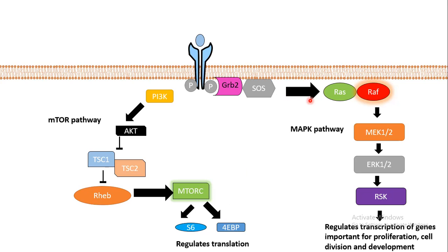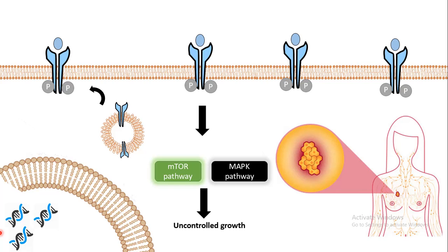Another important pathway for growth and division of cells is the MAP kinase pathway. This activated receptor can activate the signaling cascade of the MAP kinase pathway, which regulates multiple genes including cyclin D1, which helps in cell division and thereby cellular proliferation. Other anti-apoptotic genes like bcl-2 and bcl-xl are also downstream products of this MAP kinase pathway. In cancer, the number of receptors on the cell surface dramatically increases from 20,000 to about 2.2 million.